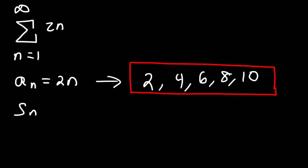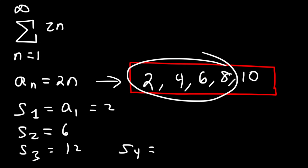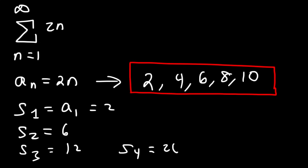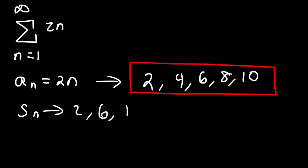s sub n relates to the partial sum. s sub 1 is just a sub 1, which is 2. s sub 2 is the partial sum of the first two terms, so that's a sub 1 plus a sub 2, which is equal to 6. s sub 3 is the sum of the first three terms, which is 12. s sub 4 is the sum of the first four terms, which is 20. We can write out a sequence of partial sums.